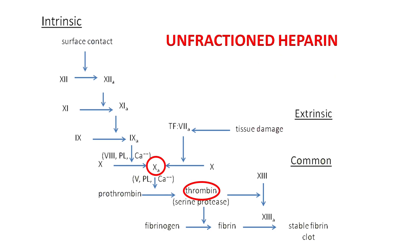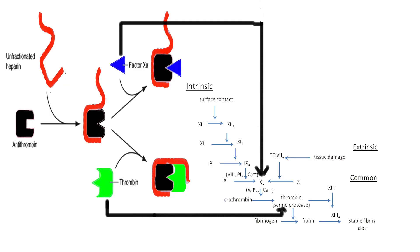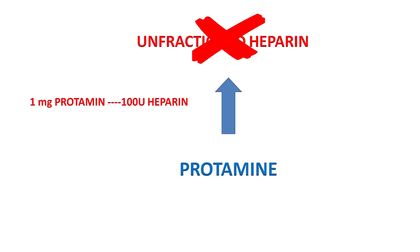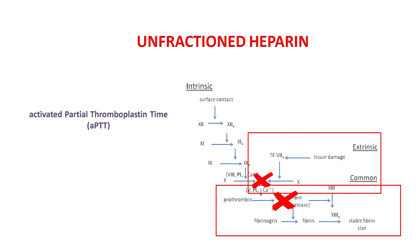Unfractionated heparin is a common anticoagulant. It inhibits thrombin and factor Xa by activating antithrombin, which inactivates thrombin and factor Xa. The duration of action of heparin is short and it can be rapidly reversed using protamine, where 1 mg of protamine can inactivate 100 units of heparin. APTT reflects the action of heparin and requires frequent testing to titrate the dosing.